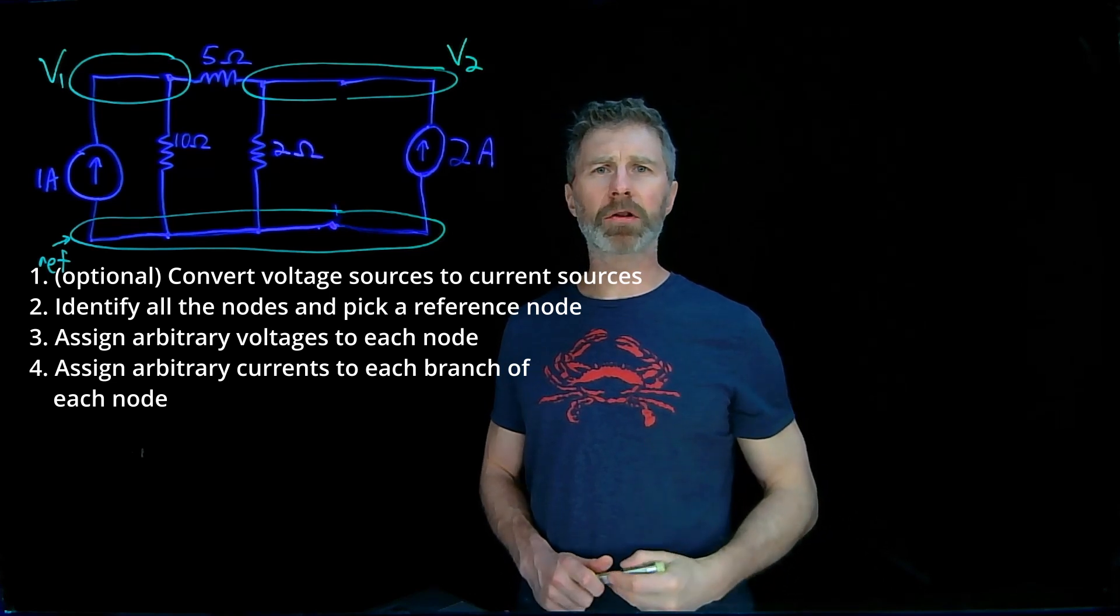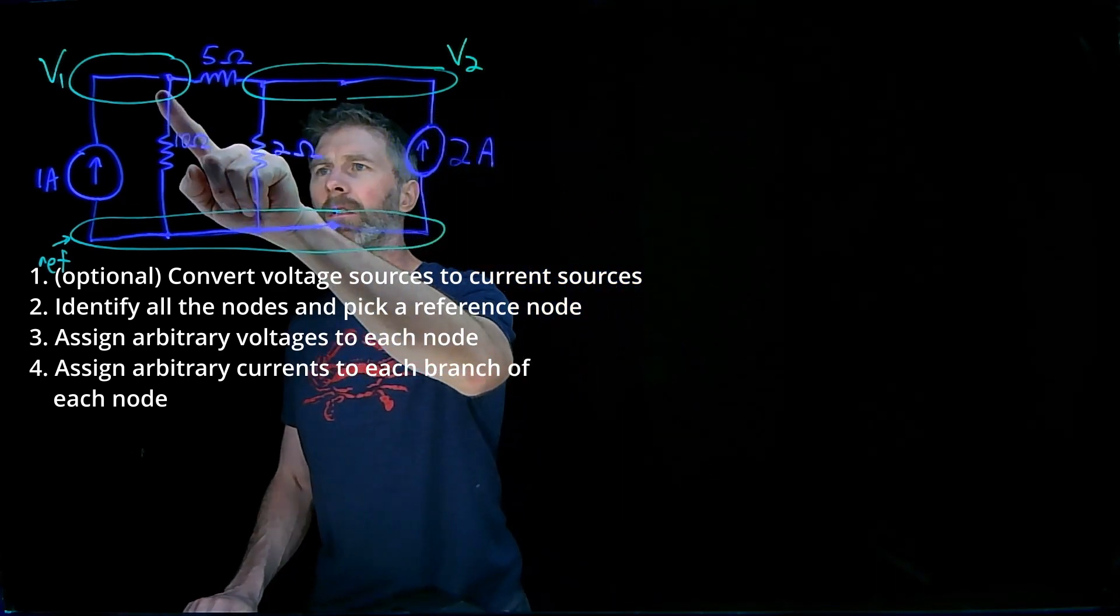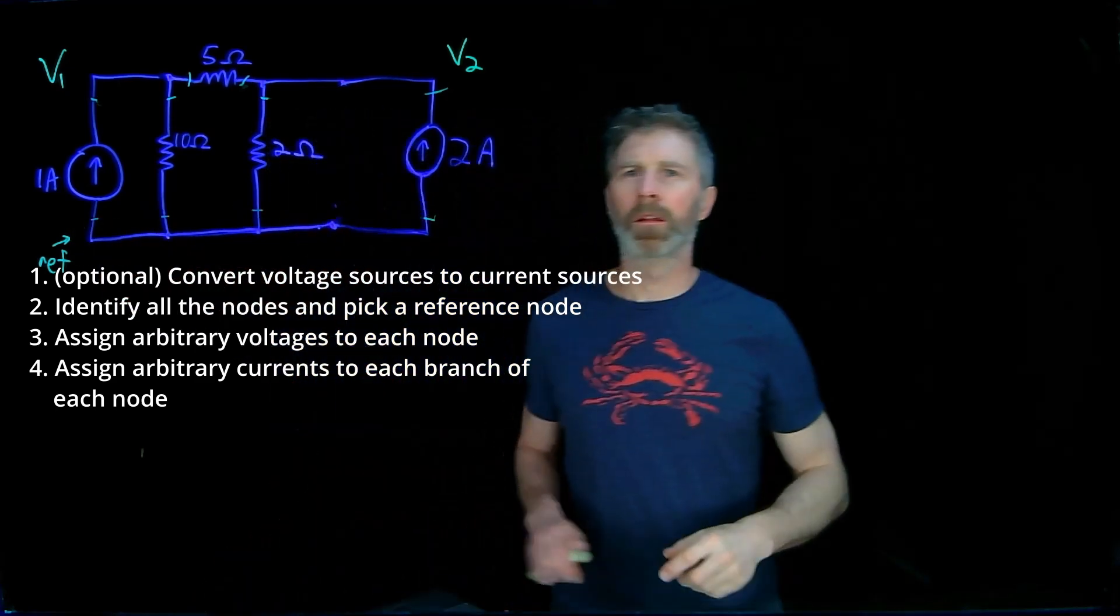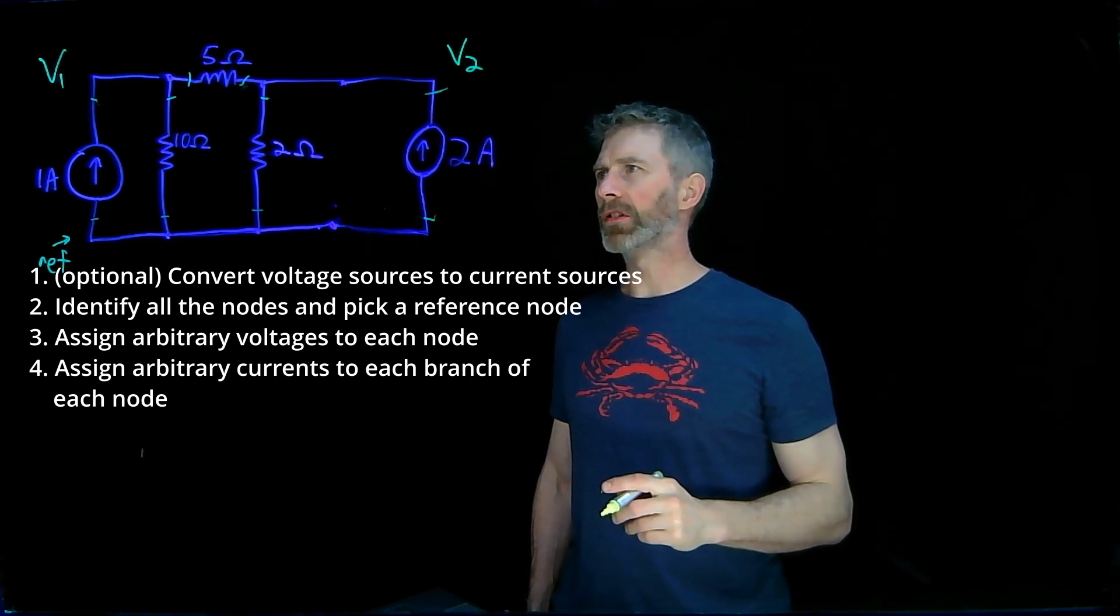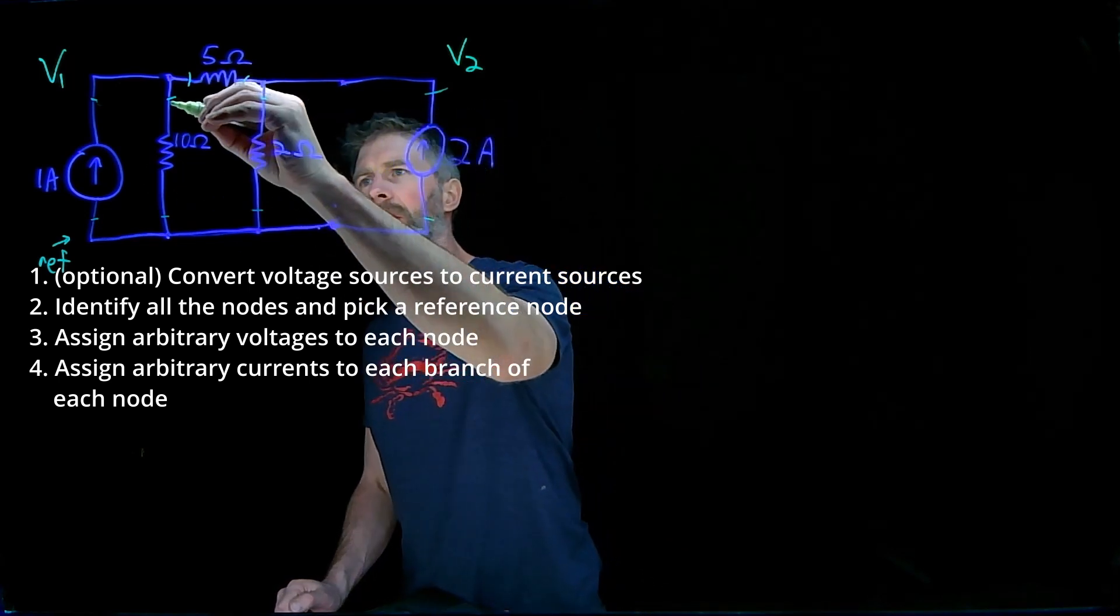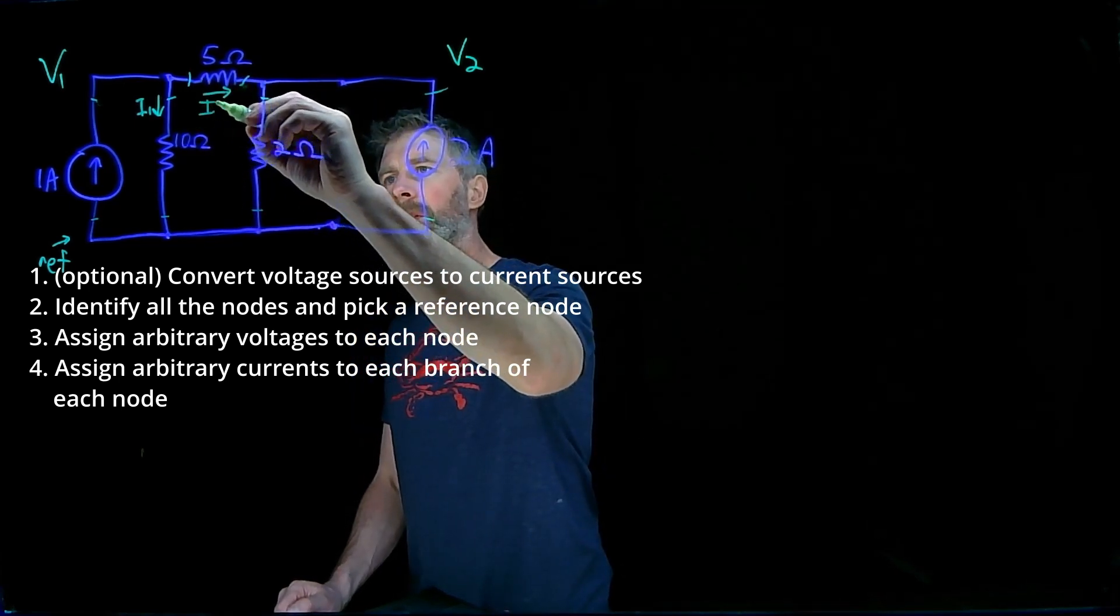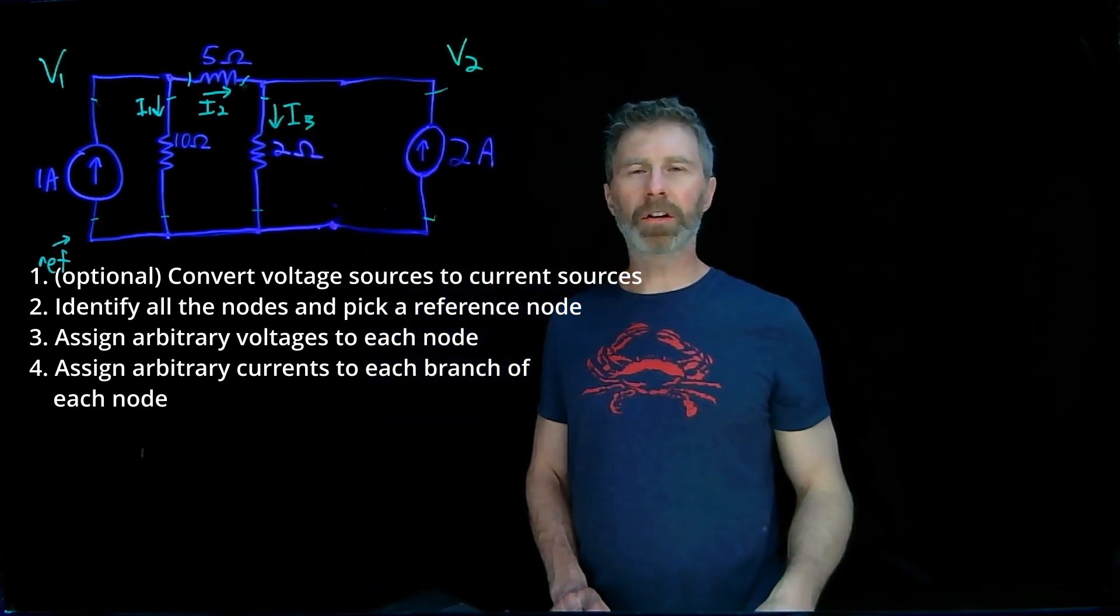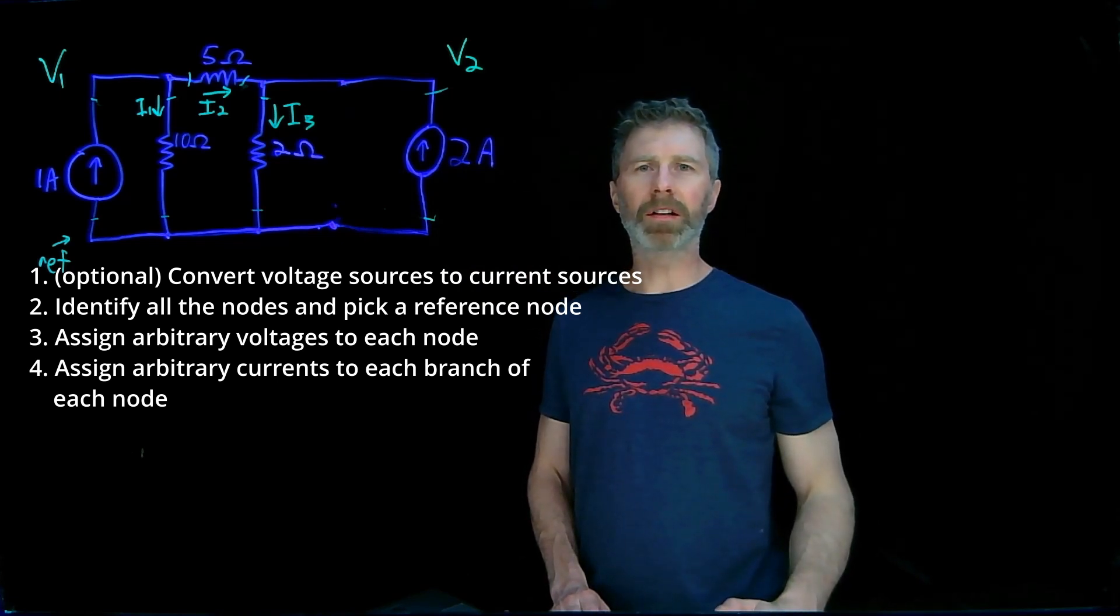The fourth step is to assign arbitrary current directions to each one of the branches going into the nodes. I'm going to erase the circles, that makes it easier to see. Assign some arbitrary current directions in each branch. I don't need to assign one for each current source because those are already assigned. Call that I1, call that I2, and call that I3. If the current is actually going in the opposite direction, that just means the current we calculate is going to be a negative number.